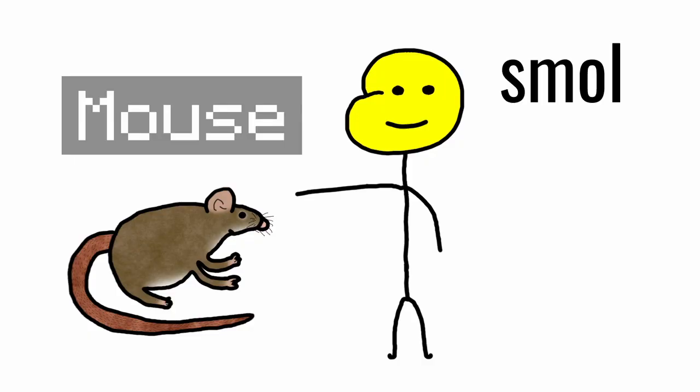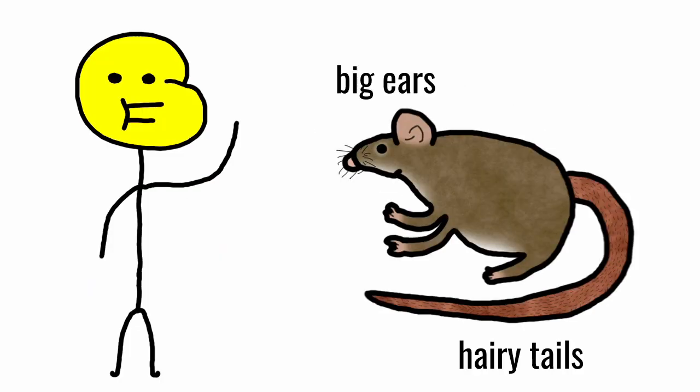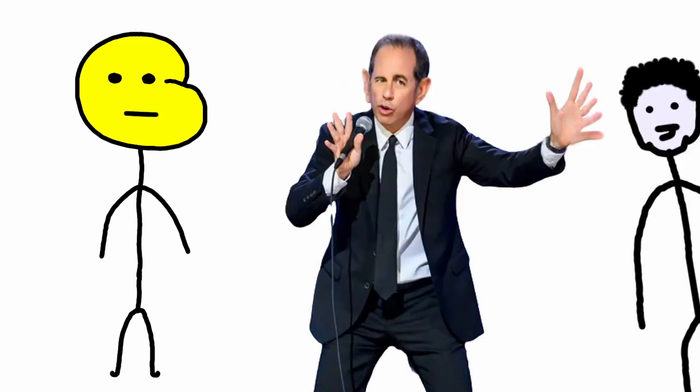Mice however are much smaller and therefore faster, so they're harder to catch. Mice have bigger ears and slightly hairy tails. Think Jerry from Jerry Seinfeld. His ears are huge and his tail is also slightly hairy. That's not the tale bro.